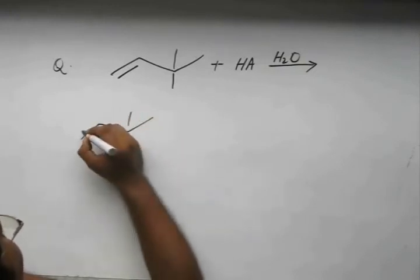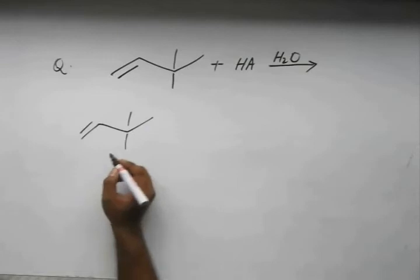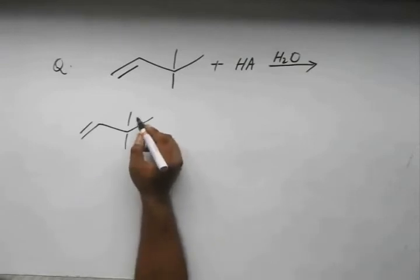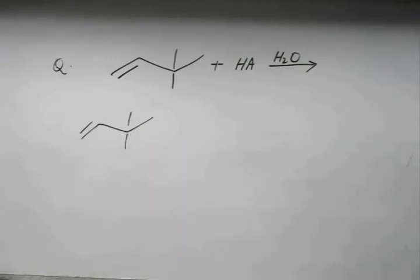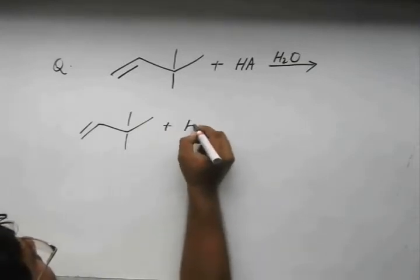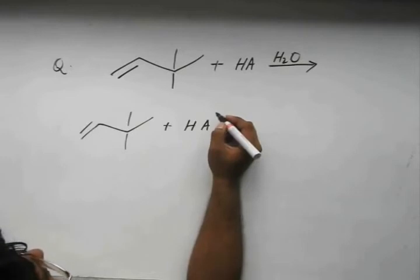Now let's do this problem. We have this compound which is 3,3-dimethyl-1-butene. Now this H-A attacks.